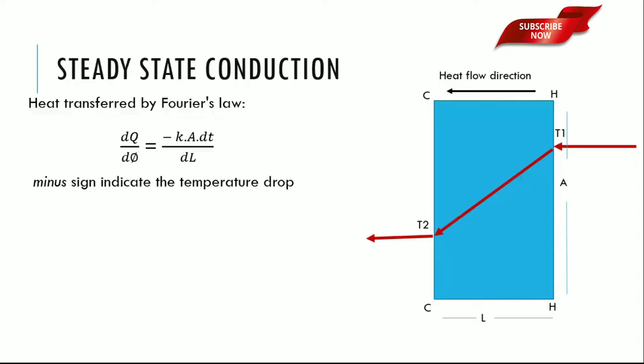Heat transferred by Fourier's law is dQ by d theta equals minus K times A times dT divided by dL, where the minus sign indicates the temperature difference between T1 and T2. K is a proportionality constant and is a function of temperature but independent of the length of the wall. A is the area of the metal wall. Assume that heat flows at right angles to the wall in steady state. dL is the intermediate thickness of the wall. dT is the temperature difference - one face of the wall has temperature T1 and the other face has temperature T2. Temperature T1 is always greater than T2.